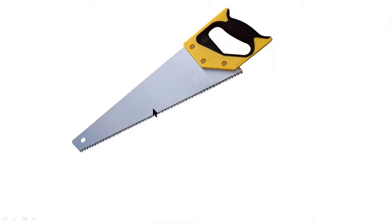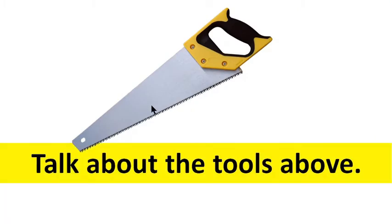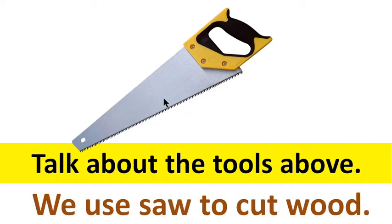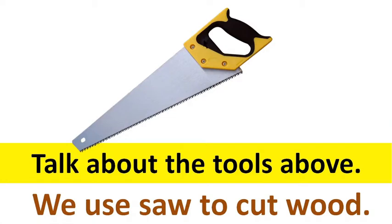This is saw. We use saw to cut wood. Saw is made of iron and wood, or plastic. This part is made of wood or plastic, and this sharp part is made of iron.